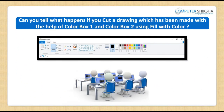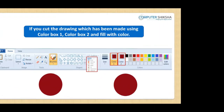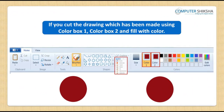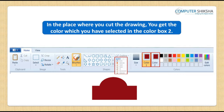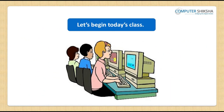Can you tell what happens if you cut a drawing made with color box 1 and color box 2 using fill with color? If you cut such a drawing, then in the place where you cut the drawing, you get the color which you had selected for color box 2.